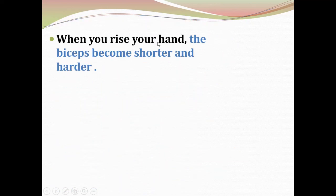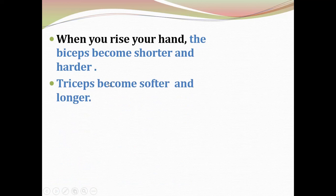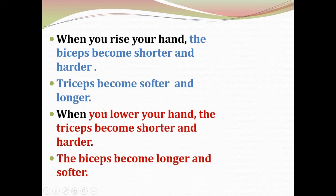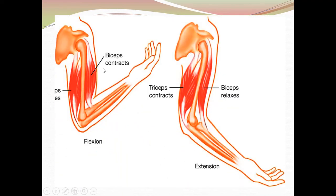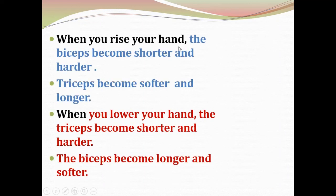When you raise your hand, the biceps become shorter and harder, and the triceps become softer and longer. The upper muscle is called biceps and the lower muscle is called triceps. When you lower your hand, the triceps become shorter and harder, and the biceps become longer and softer.